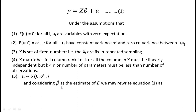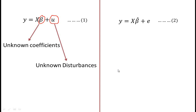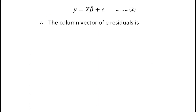Considering β̂ (beta hat) as the estimate of β, we may rewrite equation 1 as y = Xβ̂ + e (equation 2). The difference between equation 1 and equation 2 is that in equation 1, β is unknown coefficients and u is unknown disturbances, but in equation 2, β̂ is the set of estimates of β and e is the column vector of residuals. From equation 2, we express residuals as e = y − Xβ̂.